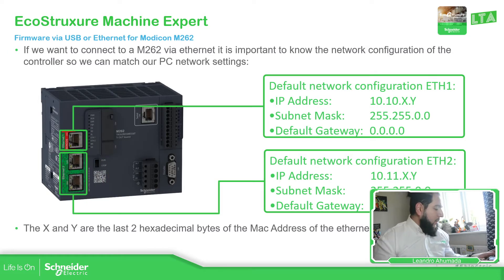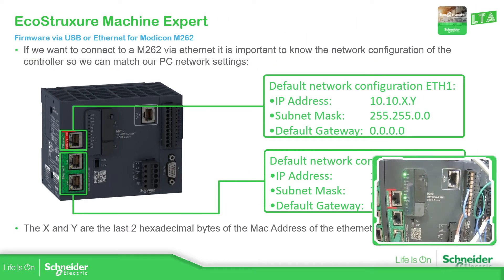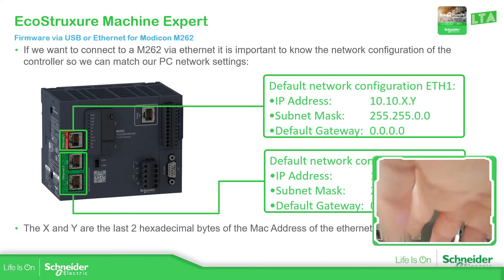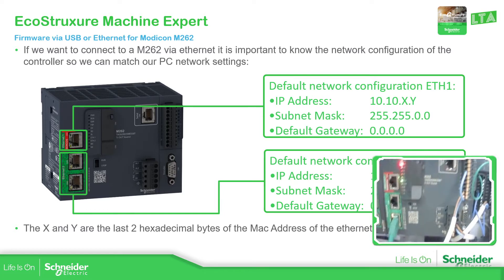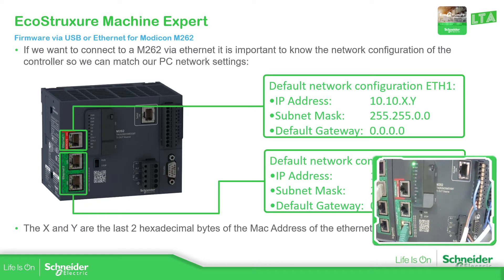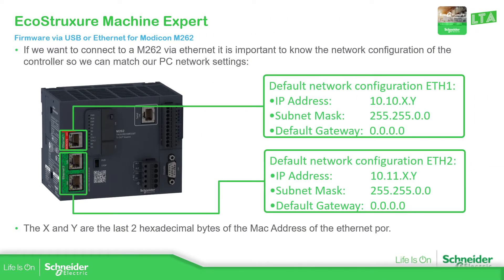In front of the controller, you have Ethernet port one and these two ports which are Ethernet port two. Next to them you have the MAC address. If we zoom in and select the pen, you can find some numbers belonging to Ethernet port one and Ethernet port two — those are the MAC addresses.